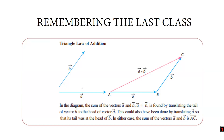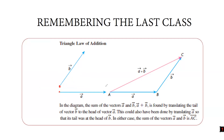The triangle law of addition says that when you're adding two vectors a and b, to visualize the result you need to transfer the tail of either vector to the head of the other one — without changing its angle relative to the axis. The resulting vector will join the beginning of vector a and the end of vector b.